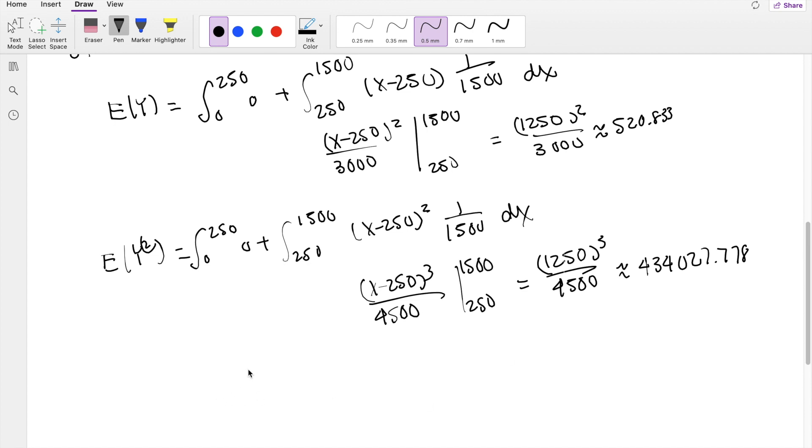And then finally plugging it back in our formula, it's going to be our second moment, 434,027.778 minus the first moment, 520.833 squared, which is equal to 162,760.417.